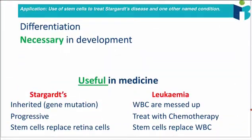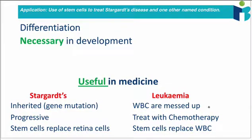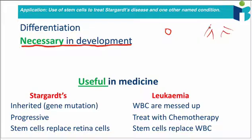You also have to understand that differentiation and stem cells is obviously going to be very necessary in development. What we mean by that is going from one cell to a fully functioning human. In order to do this process, we need cell differentiation because we need different types of cells to form a human. So it's necessary in development, and then it's also useful in medicine.